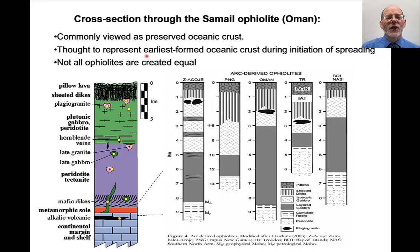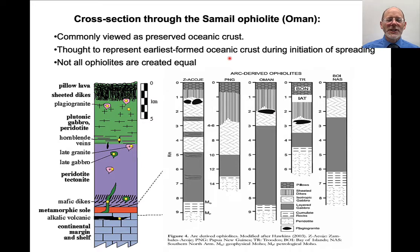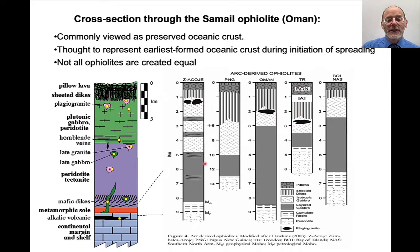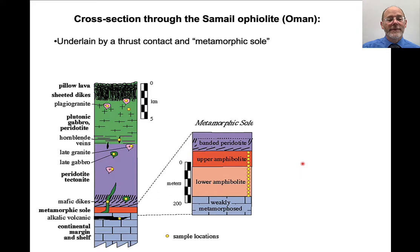These are commonly thought to represent the earliest form of oceanic crust during initiation of spreading. Sometimes these form at the initiation of subduction — subduction will actually cause the upper plate to spread a little bit, creating oceanic crust which is then compressed and thrust back up onto the continental margin. Not all ophiolites are created equal; they can have different thicknesses of pillow lavas, sheeted dikes, gabbros, and ultramafic rocks. For example, the Trinity Alps is a big ophiolite sequence that is almost completely dominated by ultramafic rocks, with very little gabbro and pillow lavas.